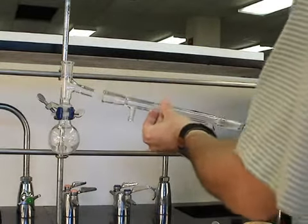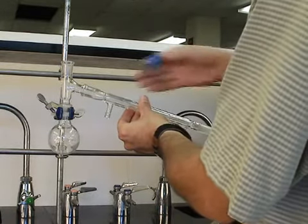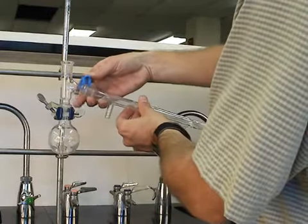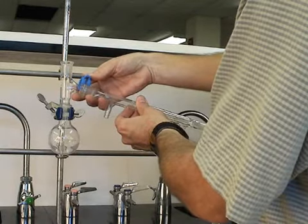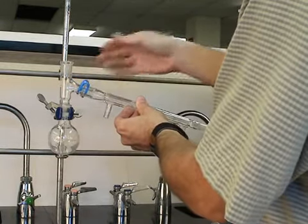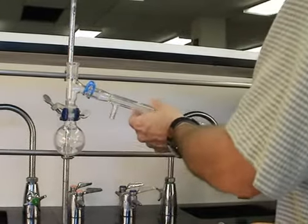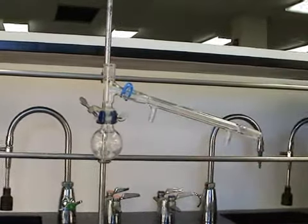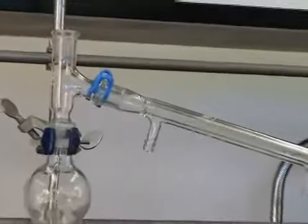We next use a Keck clamp to attach a distillation condenser. This is the smaller of the two condensers in your kit. Make sure you have the Keck clamp positioned properly. There's a large end and small end. And push it on to snap and hold the condenser in place.